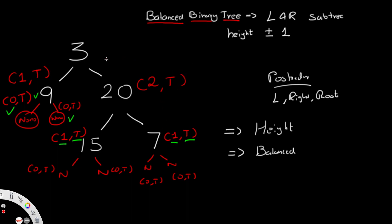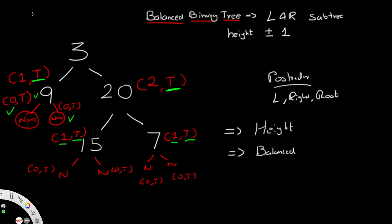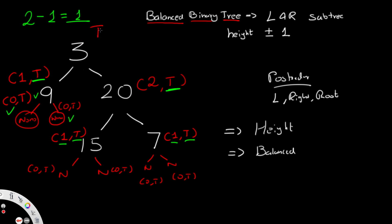Now at the root node 3, we have (1, True) from the left and (2, True) from the right. Both subtrees are balanced, and the height difference is 2 minus 1 = 1, which is acceptable. So the tree is balanced overall. The root returns True, which is our final answer.